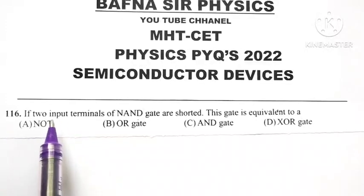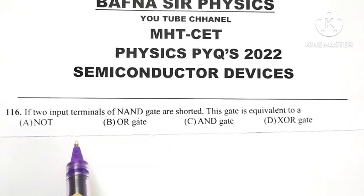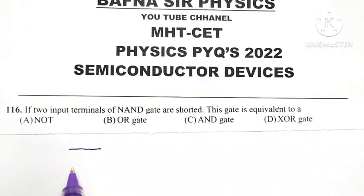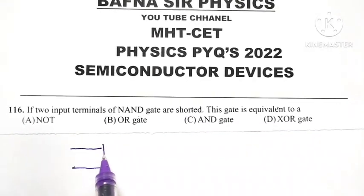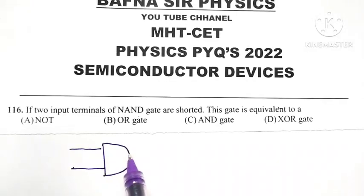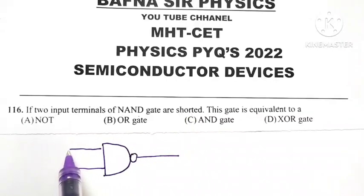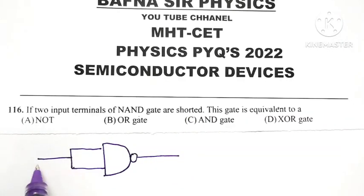If the two input terminals of NAND gate are shorted, let us see. Here we are having a NAND gate. The symbol of NAND gate is same as that of AND gate with bubble at its output. So if two input terminals of NAND gate are shorted, means they are joined together, so we are having a single input, say that input is A.